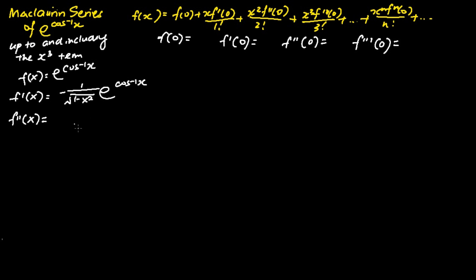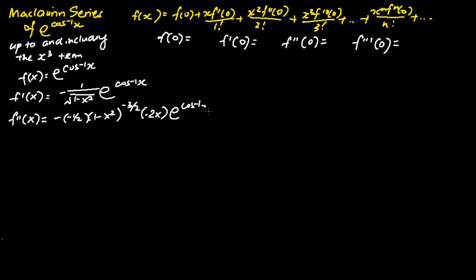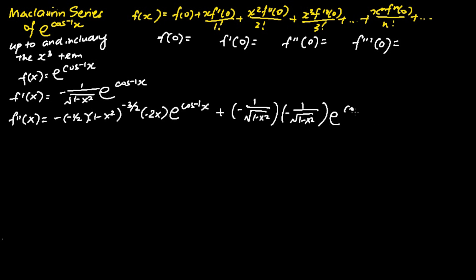We now move on to finding f''(x) by differentiating f'(x) one more time. We apply the product rule of differentiation. We differentiate the negative of 1 over square root of 1 minus x squared, which gives the negative of negative one-half times 1 minus x squared to the power of negative 3 over 2, times negative 2x. We keep e to the power cosine inverse x as is. Then we differentiate e to the power cosine inverse x, which gives f'(x): the negative of 1 over the square root of 1 minus x squared times e to the power cosine inverse x.